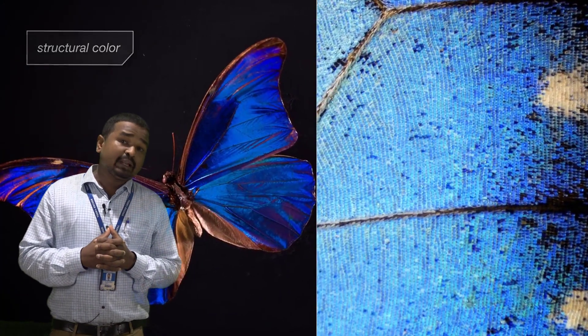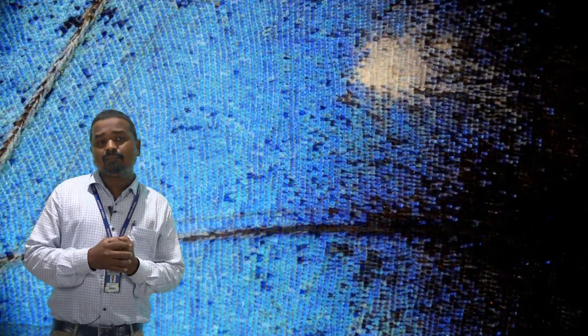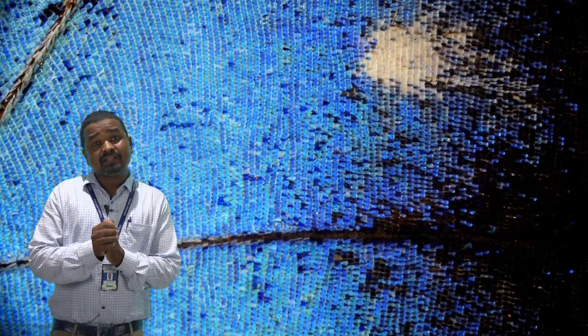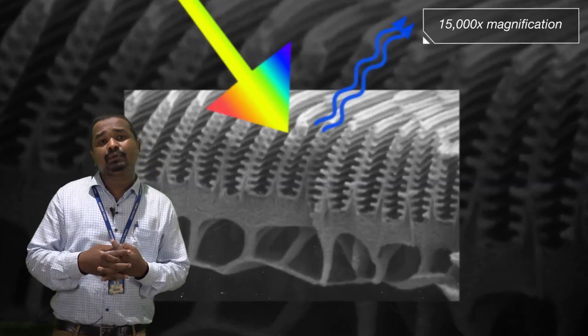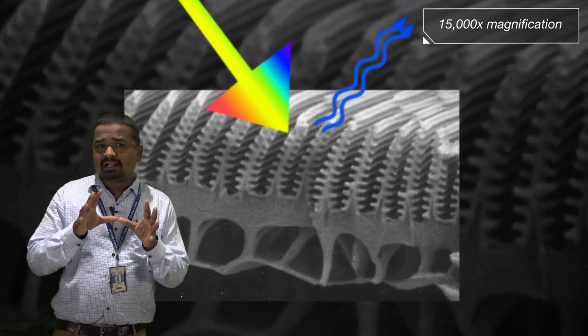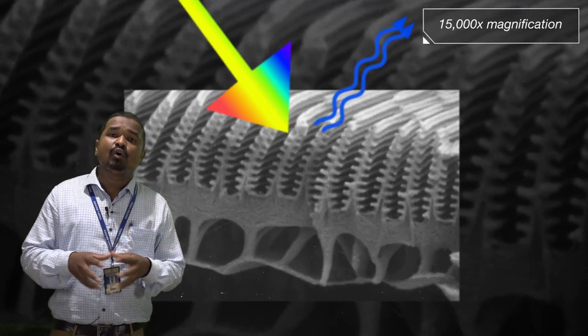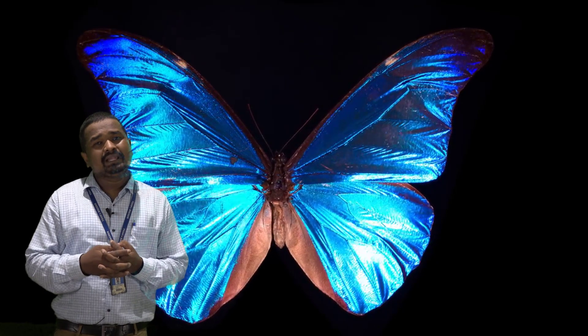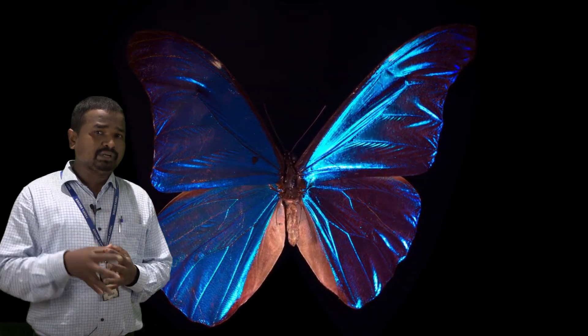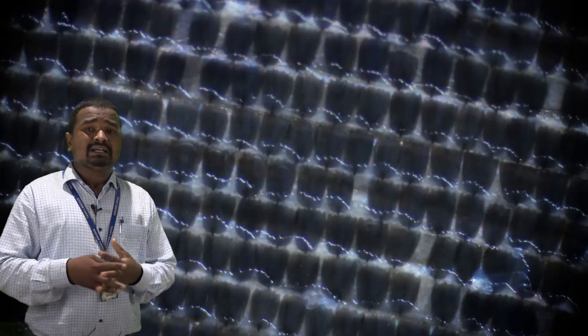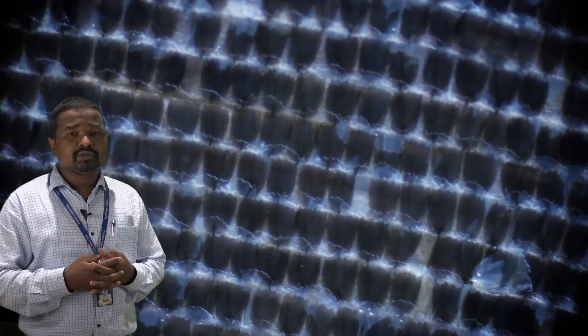The upper surface of the wings of the butterfly is made from nanostructures. When light reflects from these nanostructures, only blue color attains the conditions of constructive interference, so only that color appears on the wings. The remaining colors are absent because they obtain the conditions of destructive interference. This is one of the best examples of interference from nature.